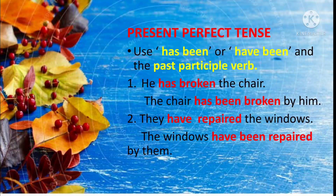When you have the present perfect tense, use has been or have been and the past participle verb. He has broken the chair — the chair has been broken by him. They have repaired the windows — the windows have been repaired by them. The chair being singular, you use has; the windows being plural, you use have.